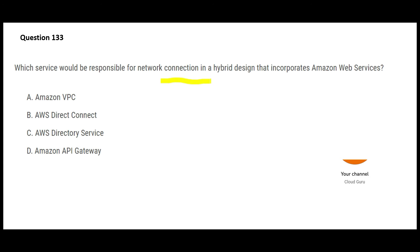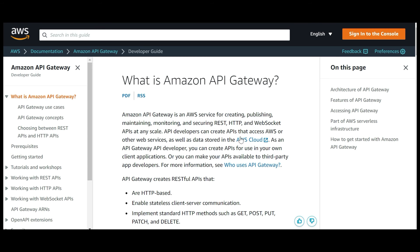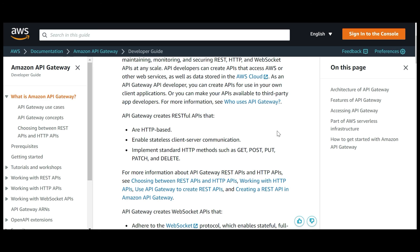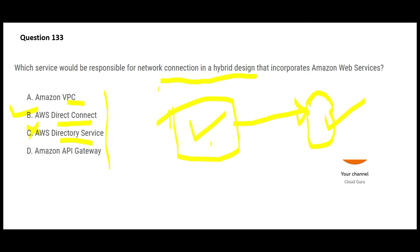The next question asks: which service is responsible for network connection in a hybrid design? A hybrid design is where you have on-premises infrastructure and cloud, with some applications residing in each. For network connection between on-prem and cloud, you use Direct Connect. Amazon VPC is a virtual private cloud inside Amazon and won't connect to on-prem. API Gateway is used to create, publish, monitor, and secure REST, HTTP, and WebSocket APIs at scale — useful for microservices — but it won't help with hybrid design connectivity.